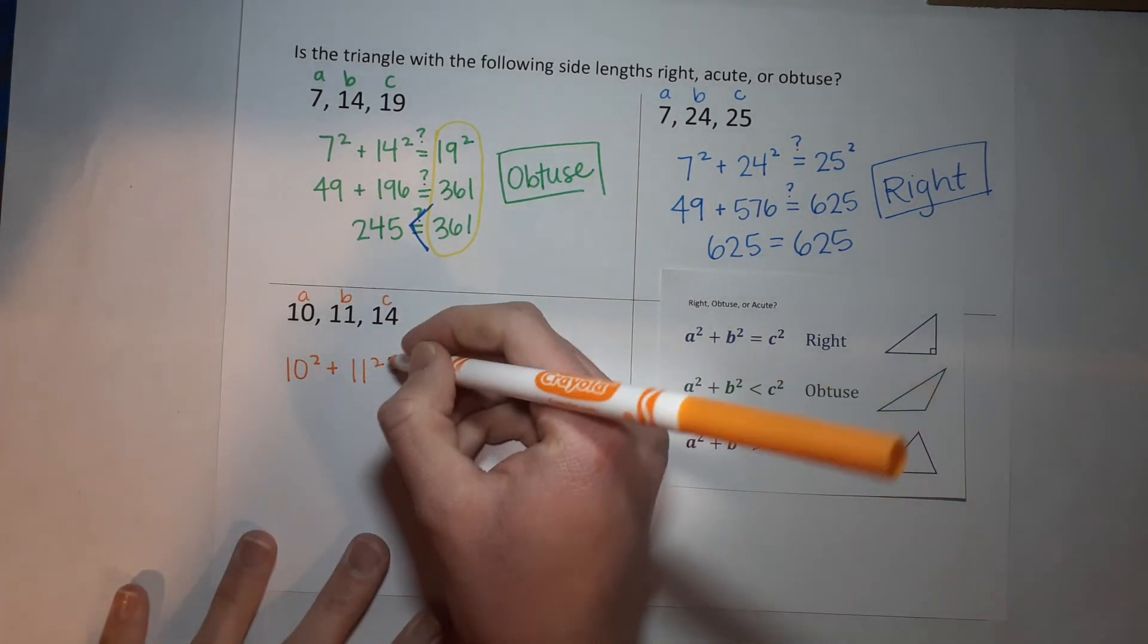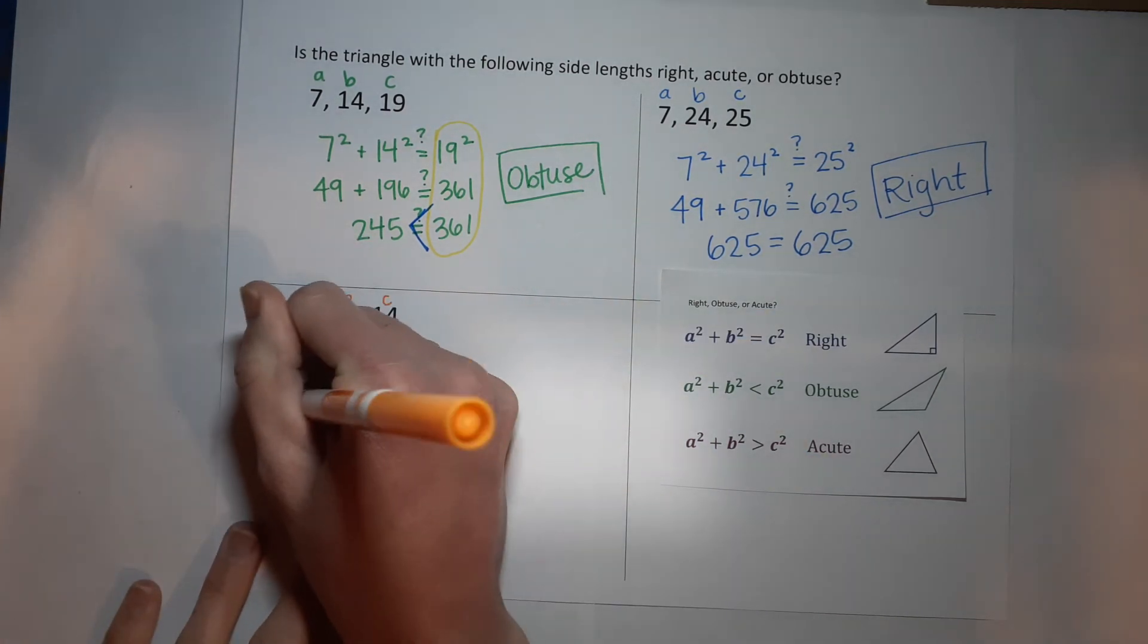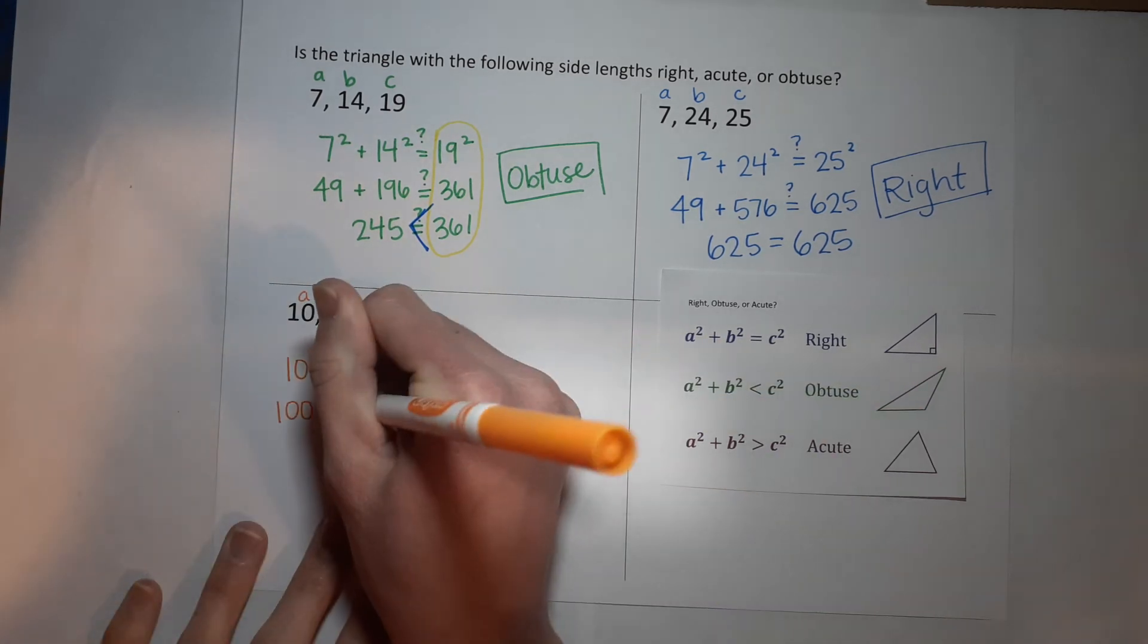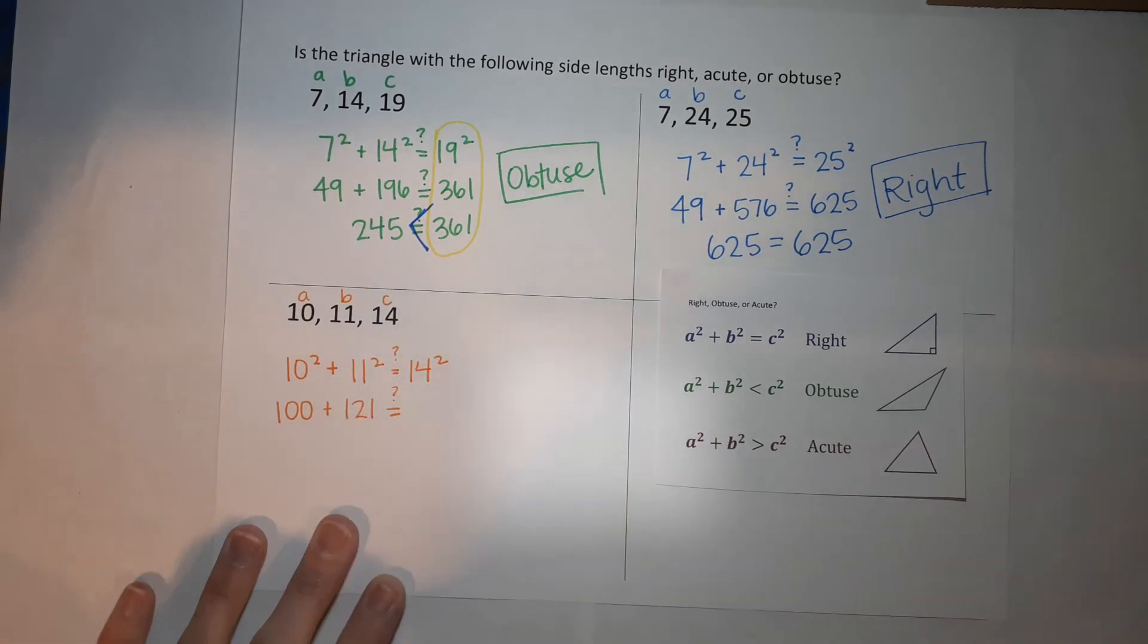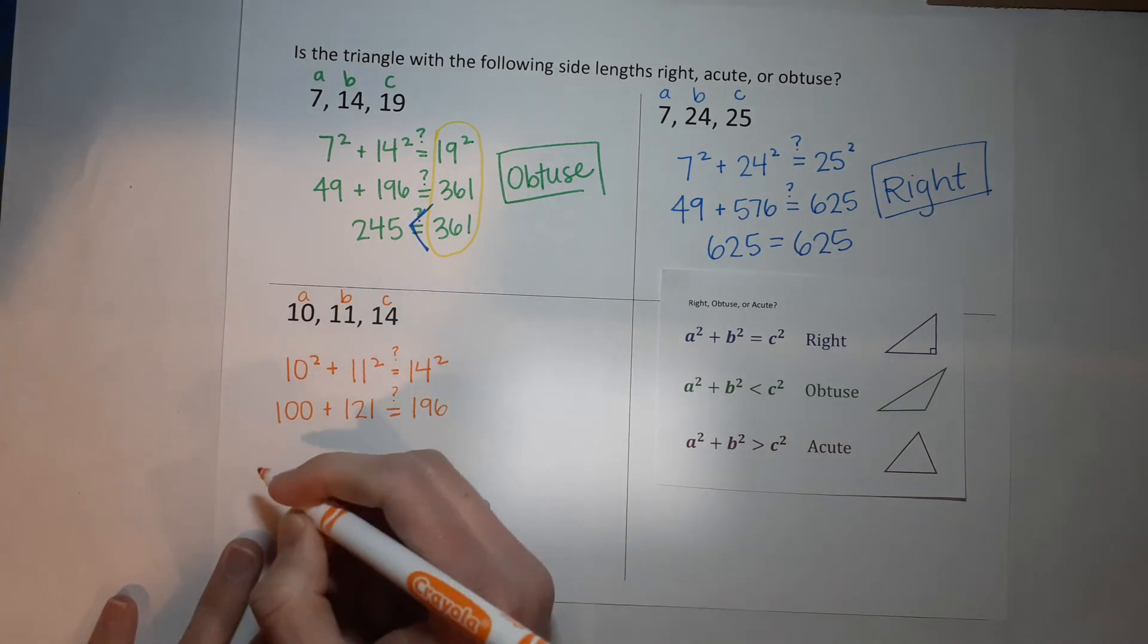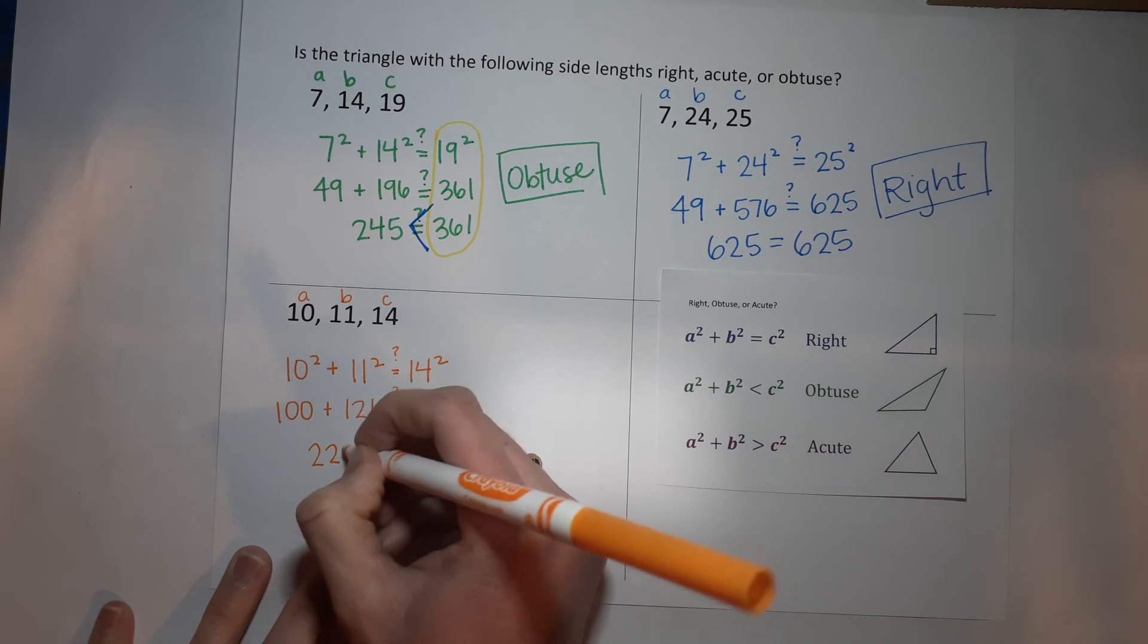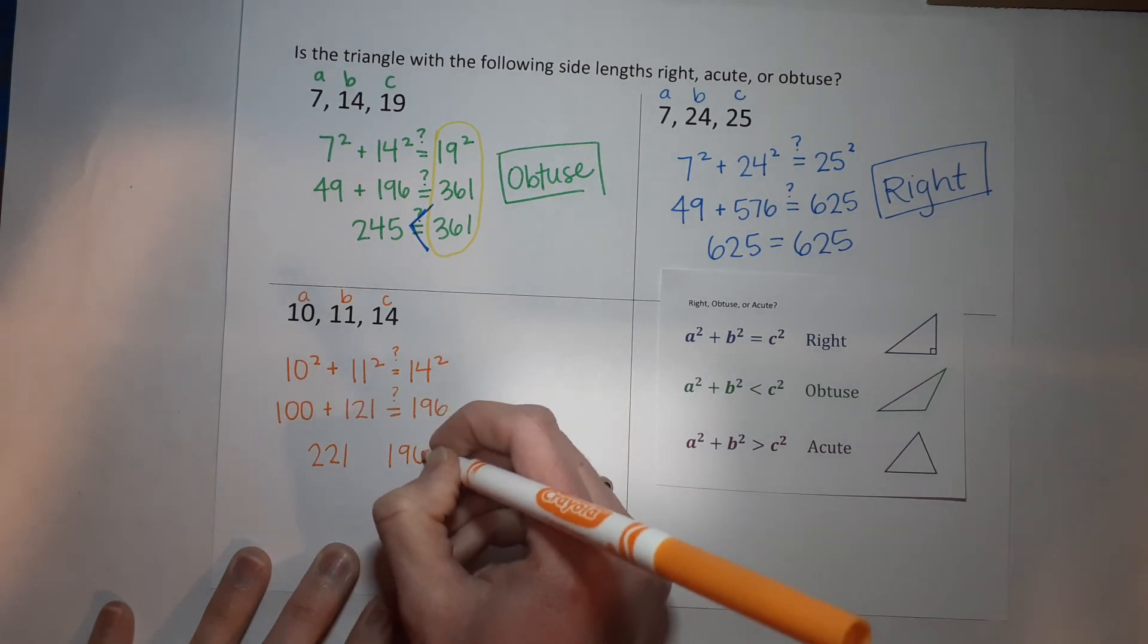So now, again, I like to put my little question mark there just to remind me. 10 times 10 is, say it with me, 100 plus 11 squared is 121. We're seeing that if that is equal to 14 squared, which is 196. Ooh, not looking like these are going to be equal. All right, 100 plus 121 is 221, which is definitely not equal to 196, right?